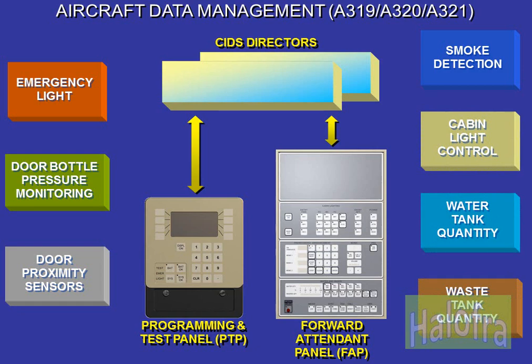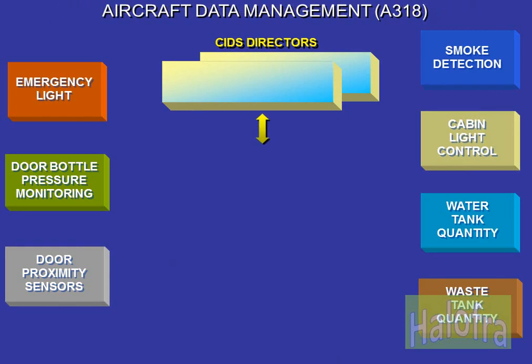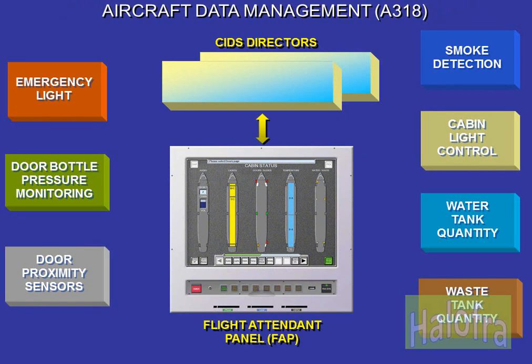It is possible to control and monitor aircraft systems from the PTP and from the FAP. On the A318, the flight attendant panel displays the current cabin status on the cabin status page. The CIDS and related cabin systems are controlled and monitored from the flight attendant panel by its associated page.